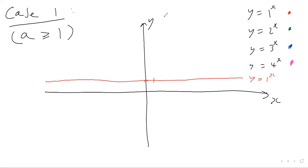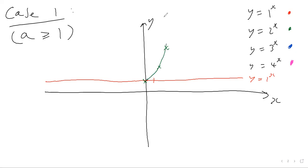Moving on to the green one: y equals two to the power of x. If you plug in x equals zero, two to the power of zero is one, so you get the coordinate (0, 1). Then plug in x equals one — two to the power of one is two. Then x equals two — two to the power of two is four. So you get an exponential growth curve.